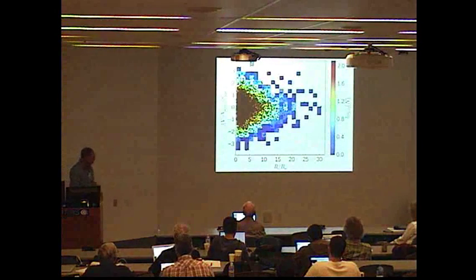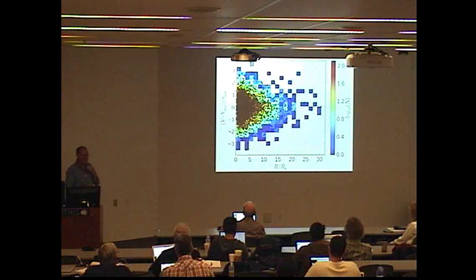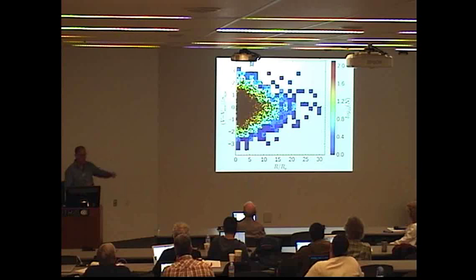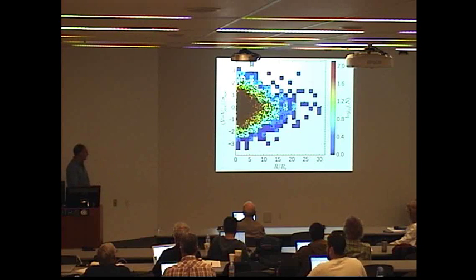This is a plot of all the globular clusters that we've obtained, so there's 4,000 of them here, all the galaxies stacked together, just showing their velocity relative to the systemic velocity of the galaxy as a function of effective radius. You can see we've got globular clusters going out to at least 10 effective radii.